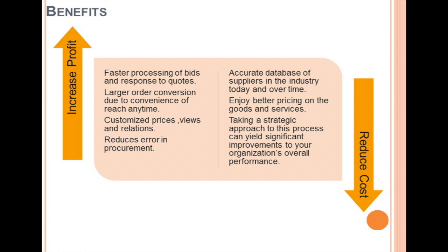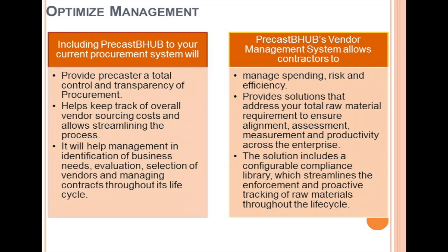You will see an increase in profit because of faster processing of bids, more quotes, quicker response time, larger order conversion due to convenience of access anytime, customized prices, views, and relations. Including Precast B-Hub in your current procurement system will provide precasters a total control and transparency of procurement, help keep track of overall vendor sourcing costs, and allow streamlining in the process.